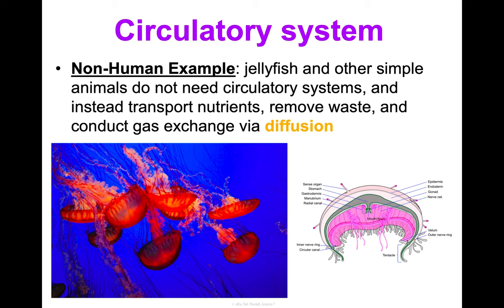The digestive system's main function is to break down food and absorb nutrients for the body. Key structures include your mouth, stomach, and intestines, among others. Interestingly, there are four types of animal digestive systems. One is the ruminant digestive system, found in cattle and deer, which features a large stomach with four compartments.